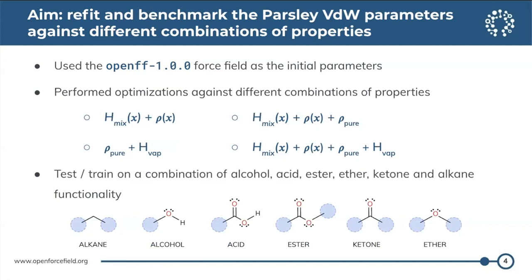To investigate this problem, the approach we took was to start with Open Force Field 1.0.0 — essentially the first Parsley force field — and refit a select number of its van der Waals parameters against four different training sets, where each training set contains a different combination of properties. One contained only pure properties as a historical baseline, one contained only the mixture properties of interest, and then combinations of pure and mixed properties — because we weren't sure if mixed properties alone are sufficient to constrain things, i.e. whether training on mixed properties might improve mixed properties at the expense of making pure properties worse.